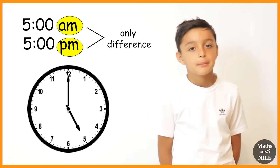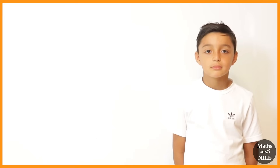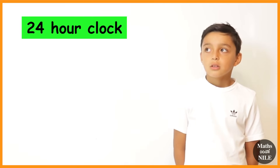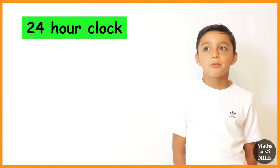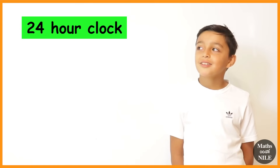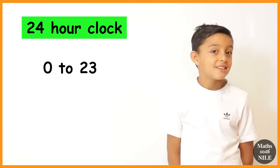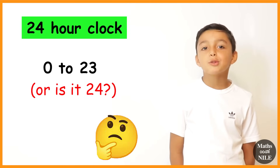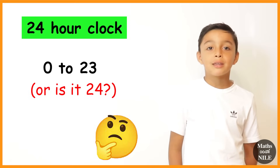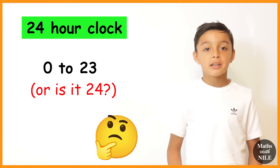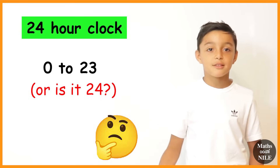So what happens when we do the 24-hour clock? Do we use the numbers 1 to 12? No, we use 0 to 23. So do we not use 24? No — even though there are 24 hours in a day, it's like minutes: there are only 59 minutes until the next hour, and there are only 23 hours until the next day.